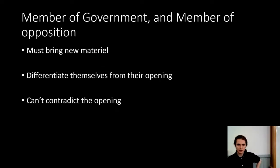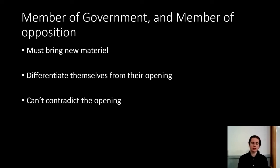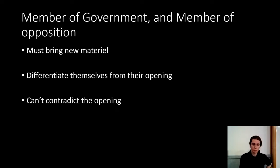Then we move on to the back half of the debate, where we have the member of government and member of opposition. These two positions must do something crucial — they must bring something new. Anything said by the opening half that is repeated by the back half will not be credited to the back half; it will only be credited to the opening half. So the back half must talk about something new, and they should also explain how they are different from their opening — for example, 'our opening talked about individuals, but we are talking about systems.' They also cannot contradict their opening. If your opening said one particular thing was going to happen and you in the back half want to say something different will happen, that would be contradicting your opening and you would not be credited for that.